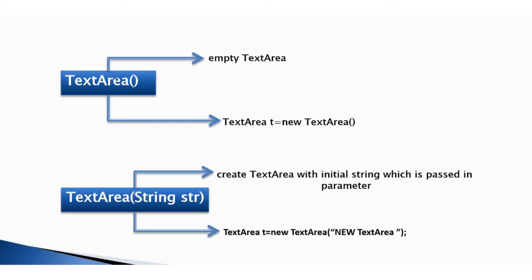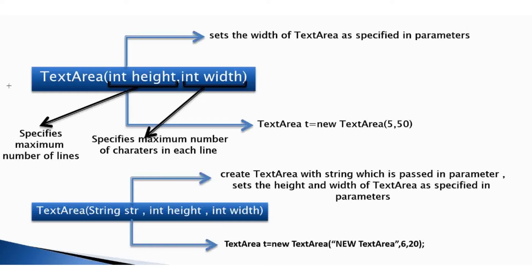The first constructor creates an empty TextArea. The second constructor, with one String parameter, creates a TextArea with an initial string passed in the parameter. The third constructor takes two integer parameters and is used to set the width and height of the TextArea as specified in those parameters.